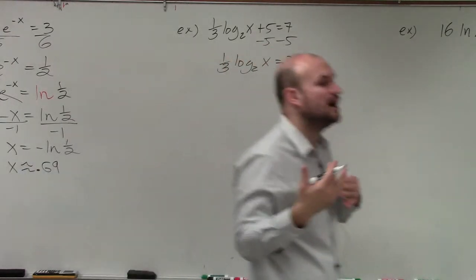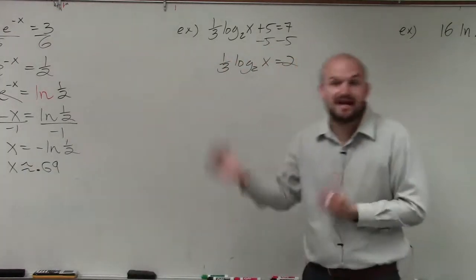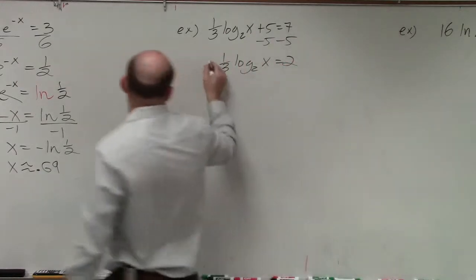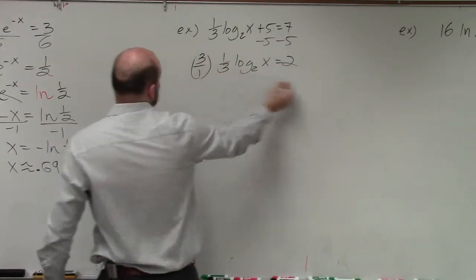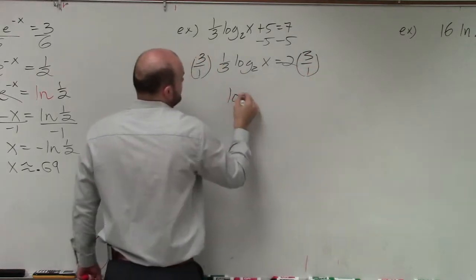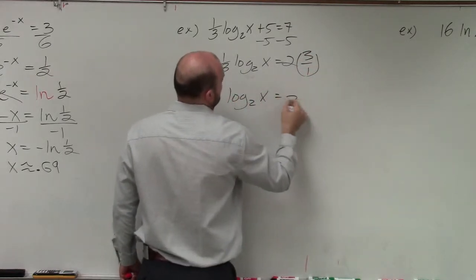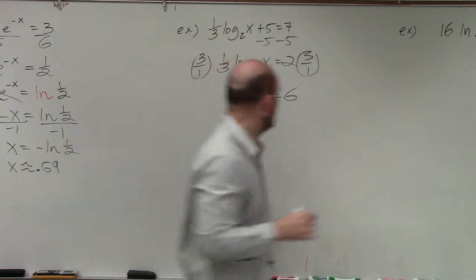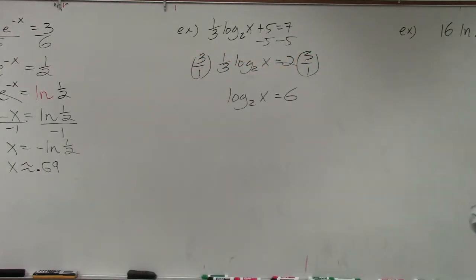Now, to undo multiplying by 1 third, I could divide by 1 third, or I could multiply by the reciprocal on both sides. So now, I have the equation log base 2 of x equals 6.